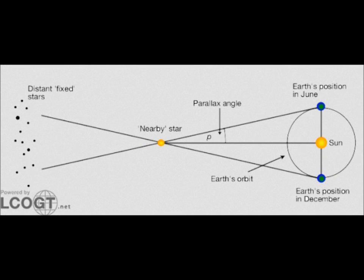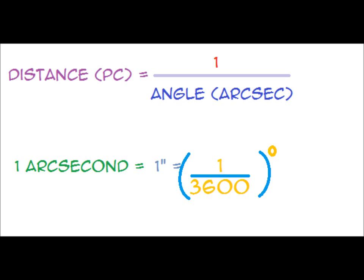Astronomical distances: distance to nearby stars can be measured by parallax. Parallax angle is half the angle moved against distant background stars over six months — the nearer the object, the greater the angle. Distances to stars are measured in parsecs; a parsec is the distance to a star with a parallax angle of one arcsecond. Distance equals 1 over angle. Brightness depends on distance to the star — the further away it is, the dimmer it will look.